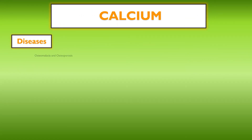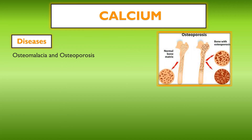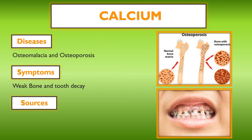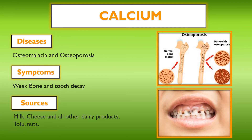Due to the deficiency of calcium in our diet, the person can suffer from osteoporosis. The bones become very weak and there is tooth decay. Sources of calcium include milk, cheese and all dairy products, tofu, and nuts. The person should take a diet rich in all these food items.